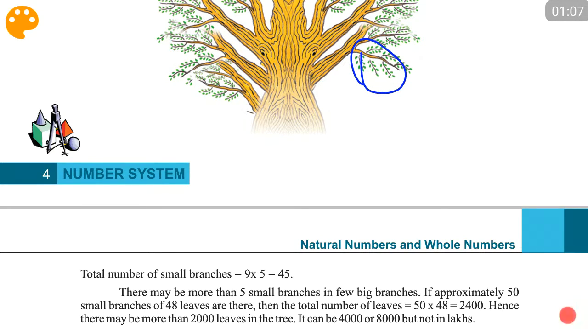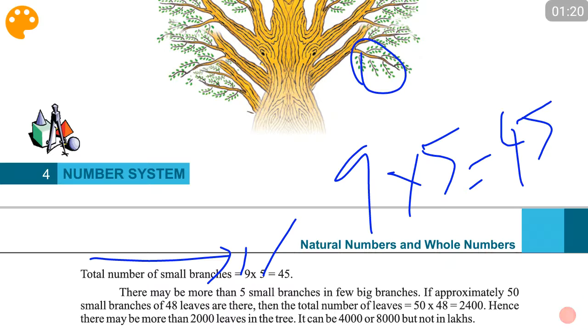First we have to find the total number of small branches. We have nine big branches, each having five small branches. Then 9 × 5 gives us the number of small branches, which is 45.